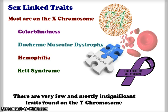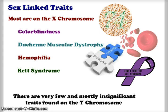These sex-linked traits are mostly carried on the X chromosome, which is the chromosome for the female. We will look at four unique situations: colorblindness, Duchenne muscular dystrophy, hemophilia, and Rett syndrome. Colorblindness, Duchenne muscular dystrophy, and hemophilia are all recessive traits on the X chromosome, whereas Rett syndrome is a dominant trait — one of very few dominant sex-linked traits. There are very few and mostly insignificant traits found on the Y chromosome, so we will not spend any time on Y-based traits.